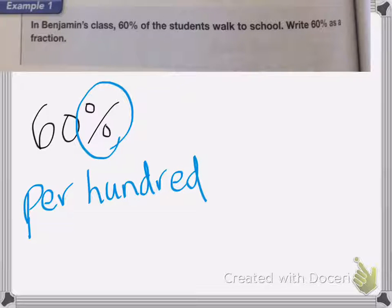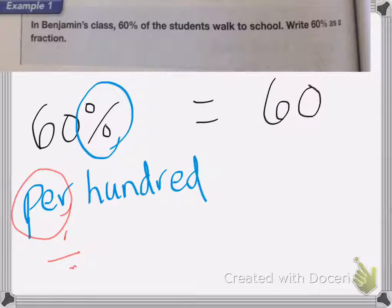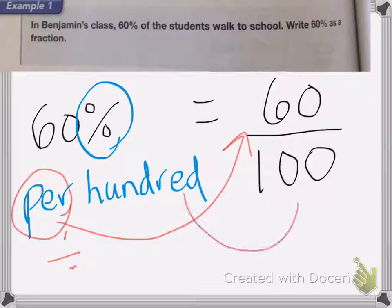Okay, now this per means divide, okay? So what we're going to do is when we rewrite this as a fraction, it's going to be 60 per hundred. Okay, per, and then this one was the hundred.